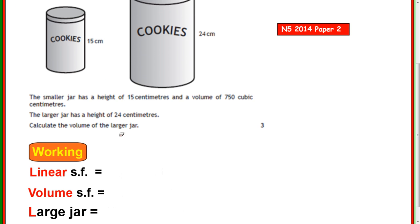So this is just the same as before. Get your linear scale factor first. Look for your corresponding sides, 24 and 15, second shape divided by first shape, so 24 over 15. Here's your calculator, it's paper 2, that comes out to be 1.6.